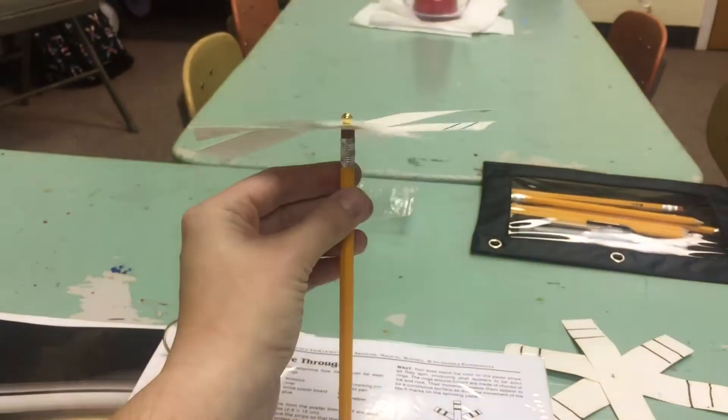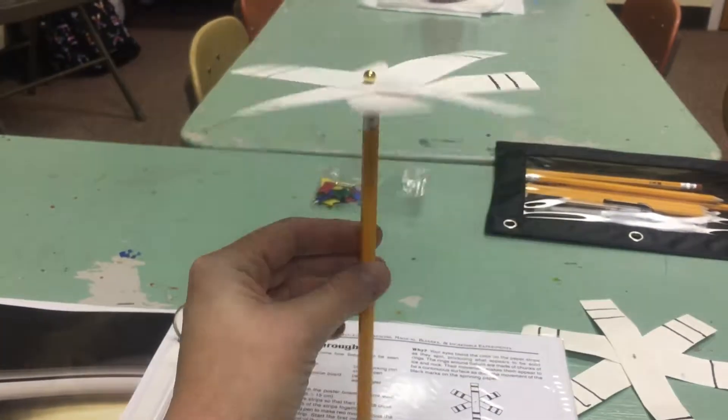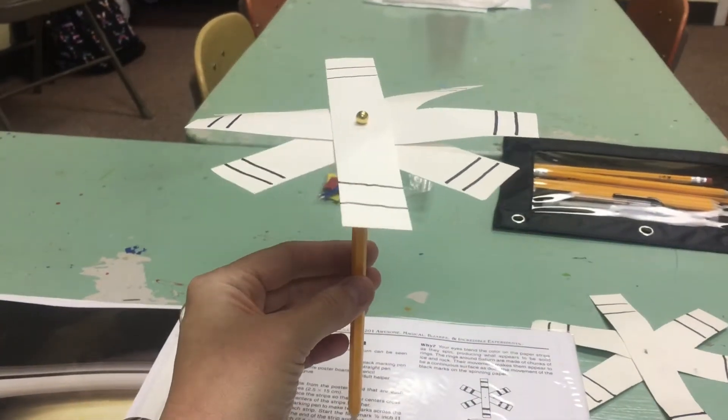So once you have what looks like a flower structure, talk about the different parts. The pin and the eraser together are Saturn.